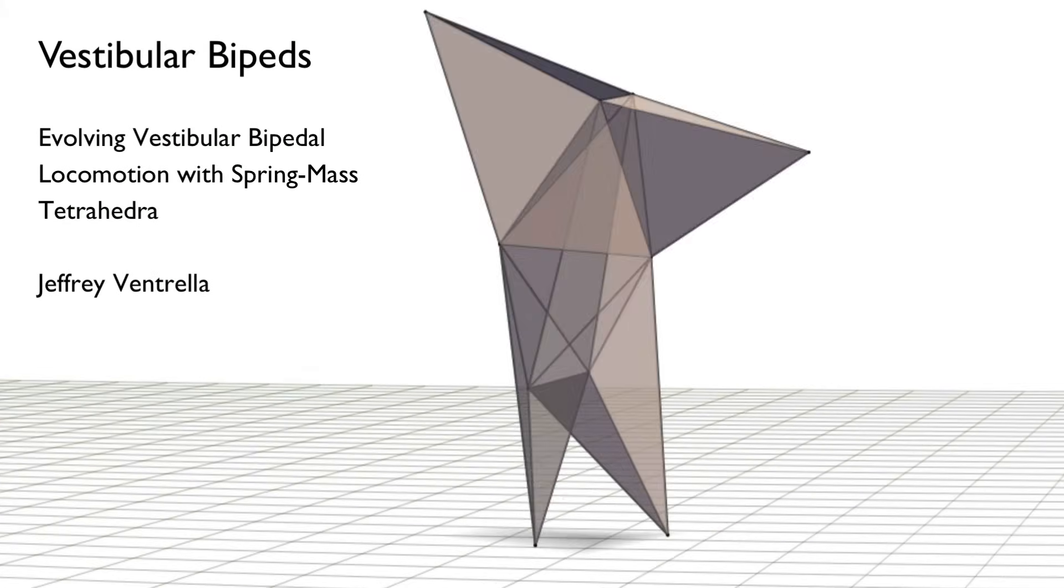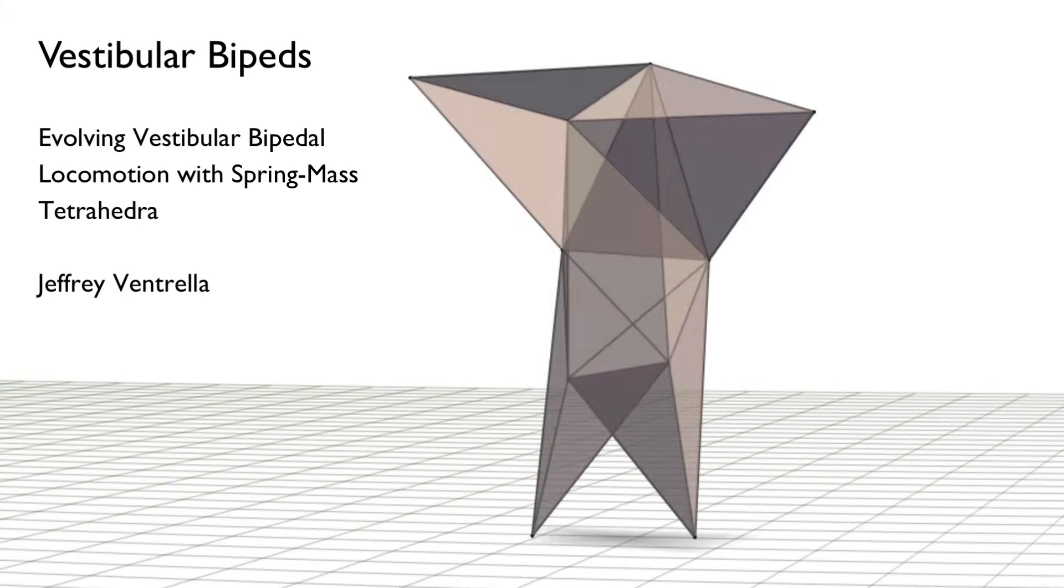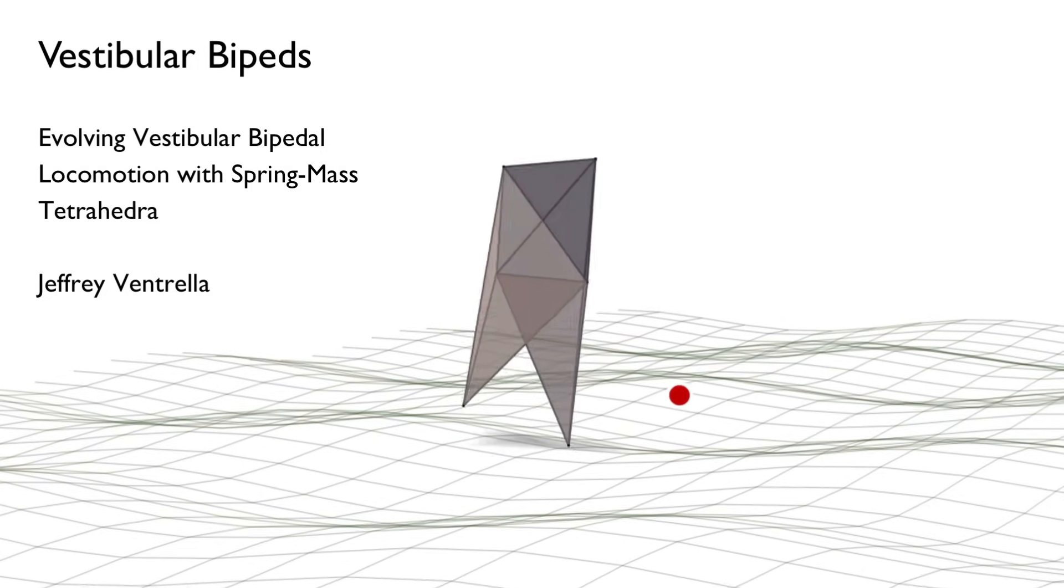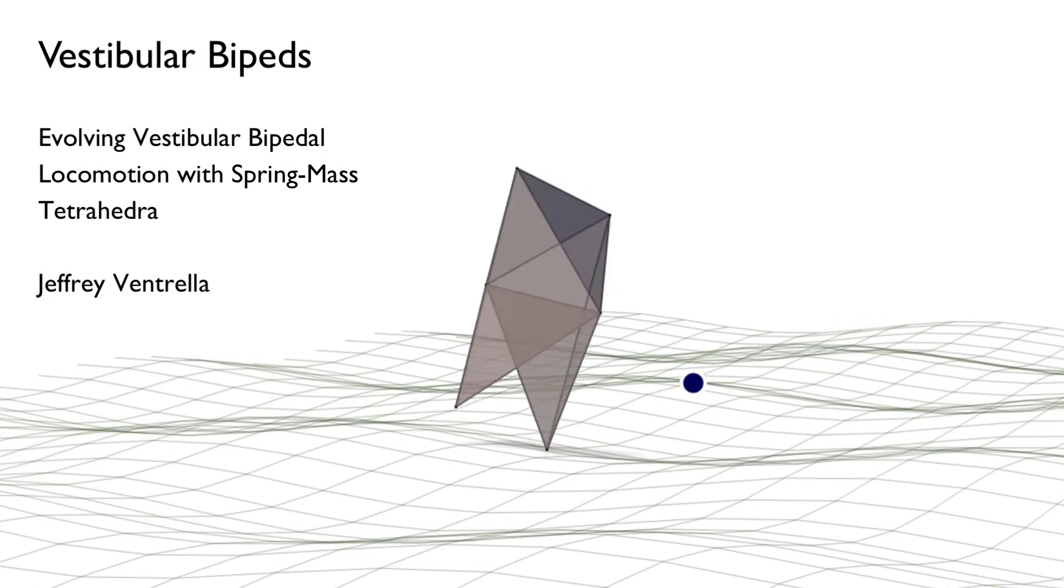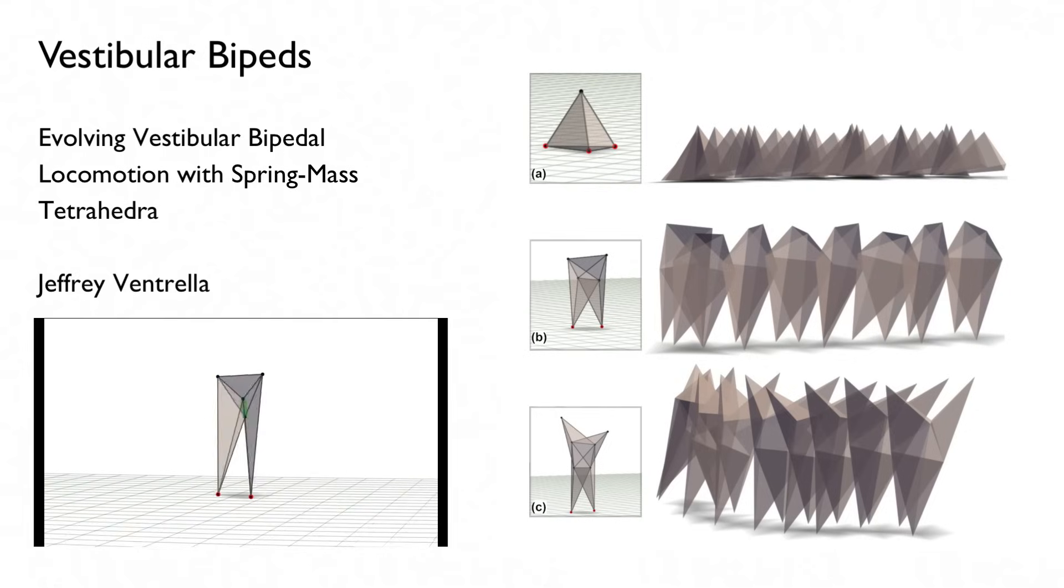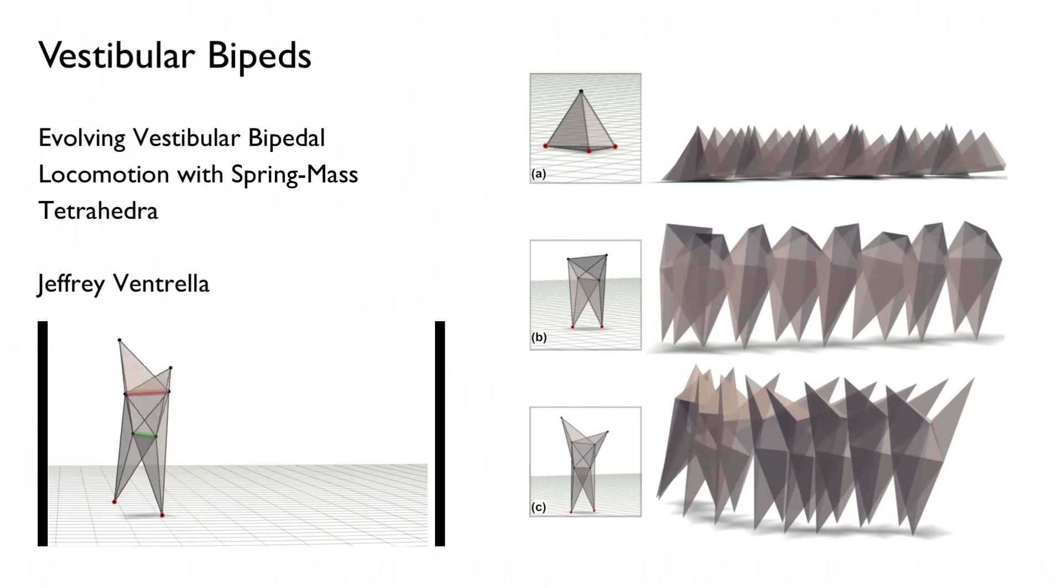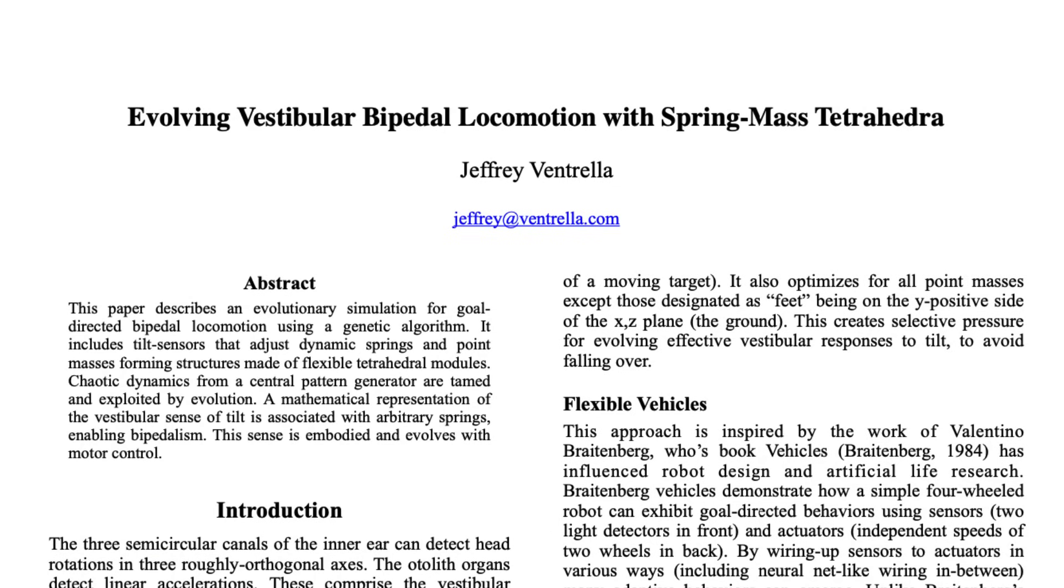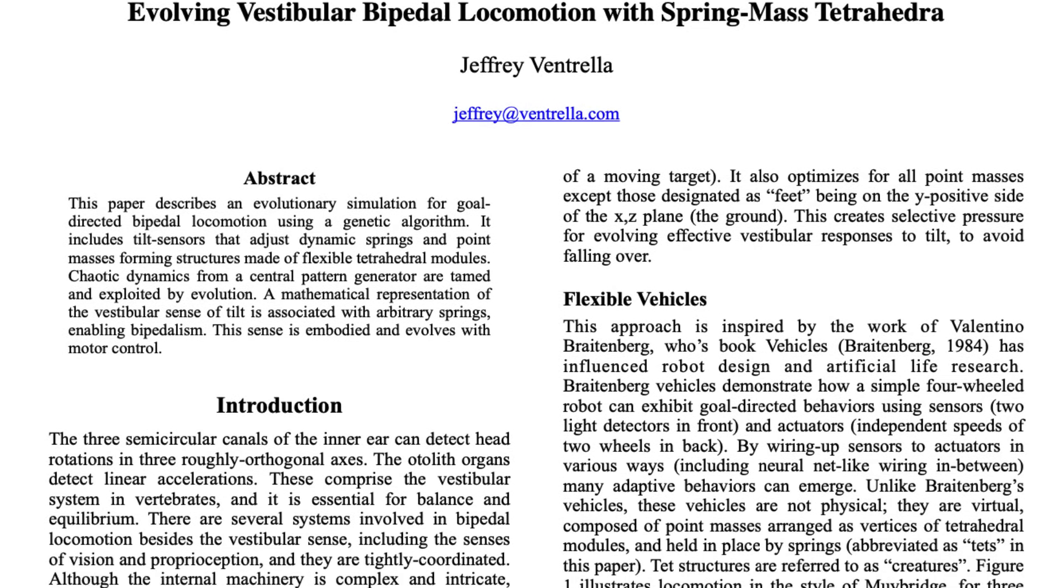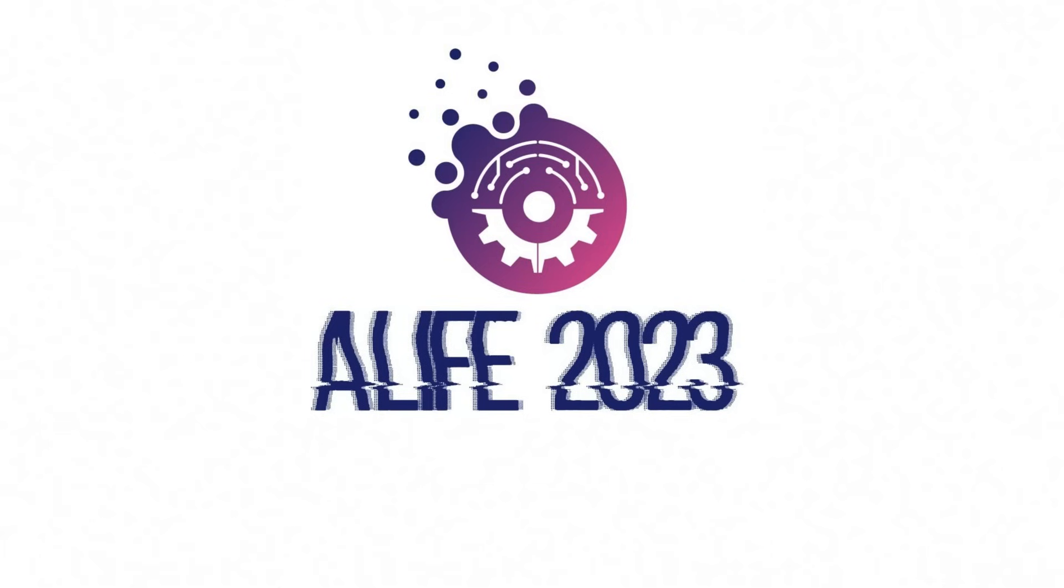This is a vestibular biped. What's a vestibular biped? It's a creature from an artificial life simulation that uses a genetic algorithm to evolve a population of creatures to achieve bipedal locomotion. It's described in a paper I recently wrote that will be published in the 2023 Artificial Life Conference Proceedings.